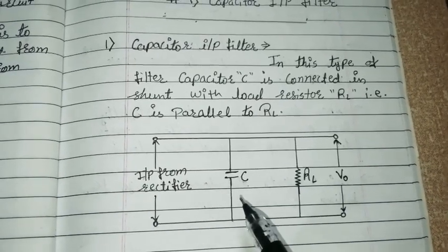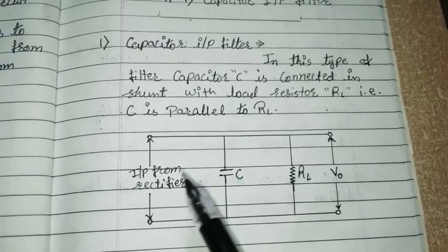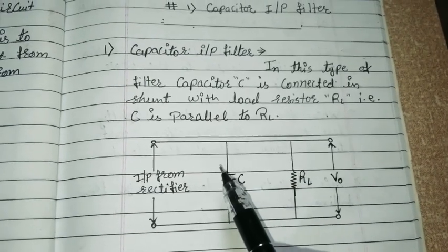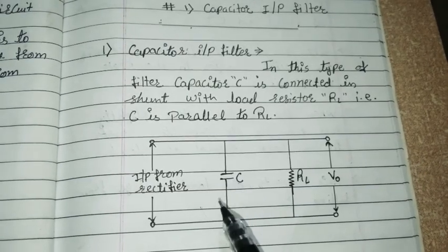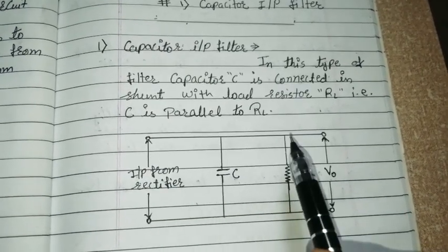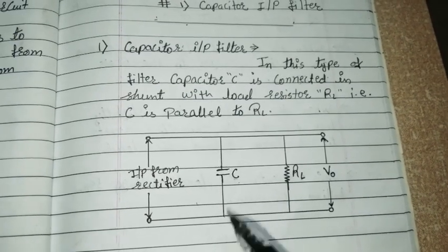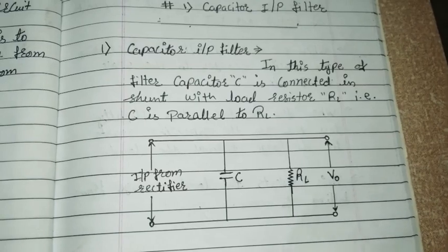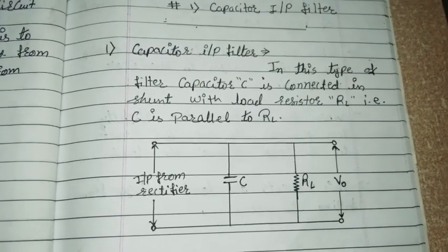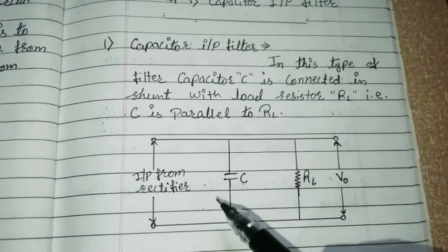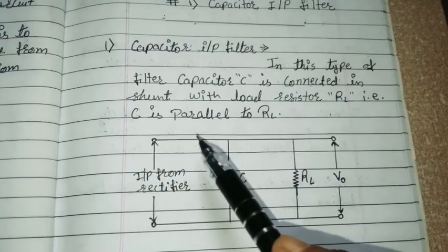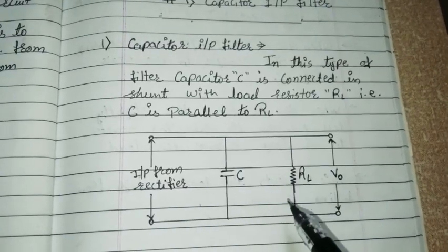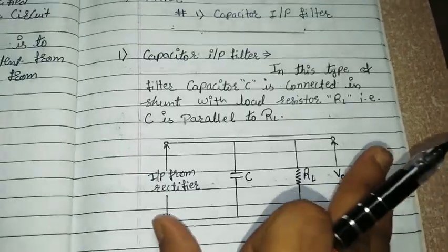Now, how does this filter work? As we know, the capacitor works only in AC — that means the capacitor blocks DC. So whenever there is DC at the output of the rectifier, it directly passes to the load resistor, because in DC mode the capacitor acts as an open circuit. The capacitor provides lower impedance to the AC component compared to the load resistor, and since current follows the path of minimum resistance, the maximum amount of AC components are grounded through the capacitor.